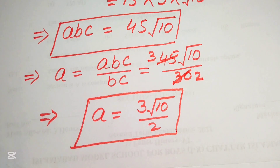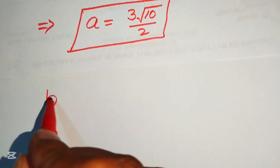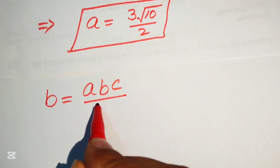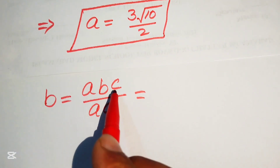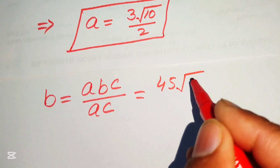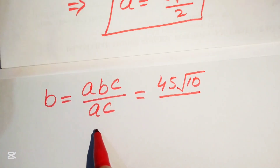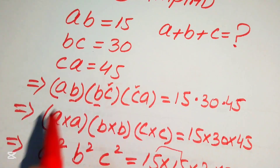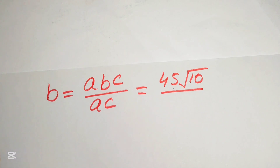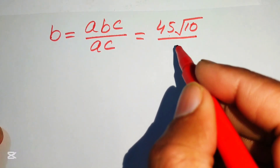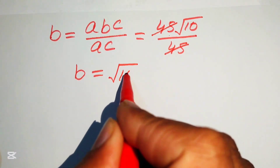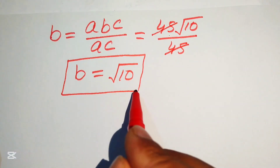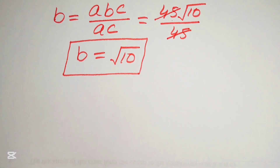Next, we find b. We write b = abc / ac. The ac cancels, leaving b. Substituting abc = 45√10 and ac = 45 (given in the problem), we get b = 45√10 / 45. The 45s cancel, so b = √10.